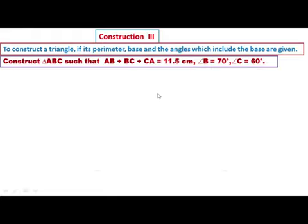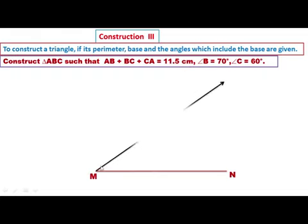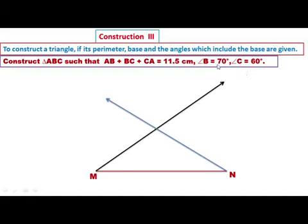Solution: First, draw segment MN of length 11.5 centimeters. Then draw an angle of measure 35 degrees at M — that is half of angle B (70 ÷ 2 = 35). Then draw an angle of measure 30 degrees at N — that is half of angle C (60 ÷ 2 = 30).